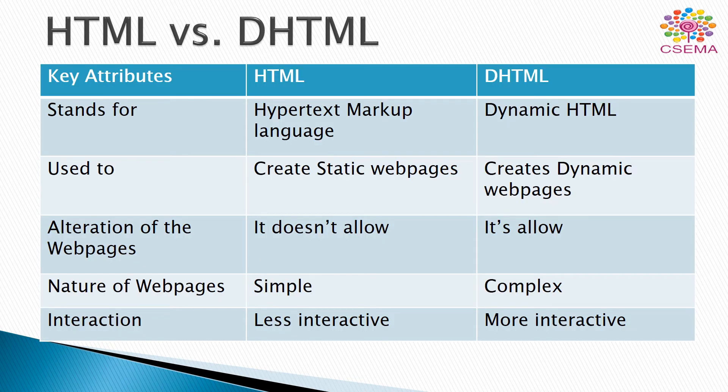Here we list all the major differences between HTML and DHTML. HTML stands for hypertext markup language while DHTML stands for dynamic hypertext markup language. HTML is used to create static websites while DHTML is used to create dynamic websites — that's why it is called dynamic HTML.